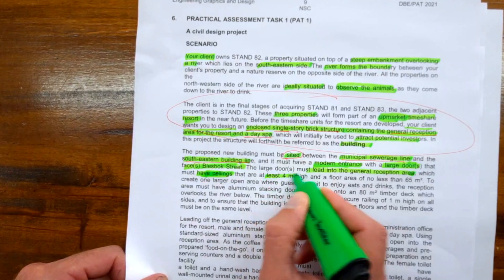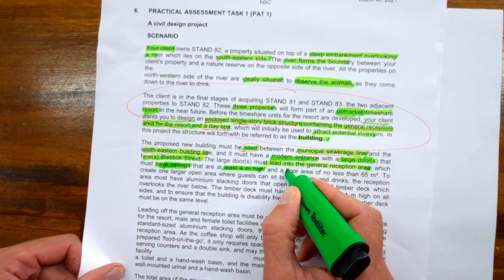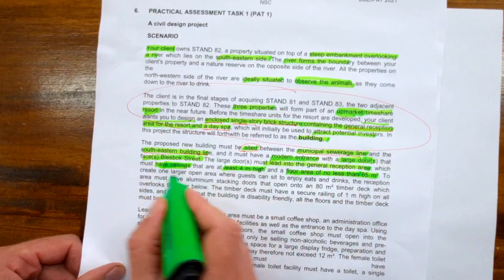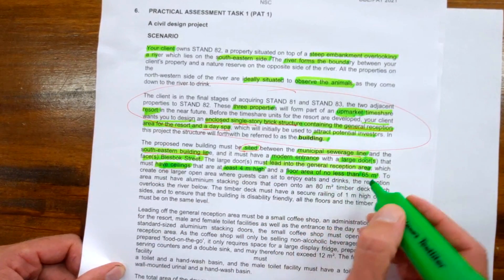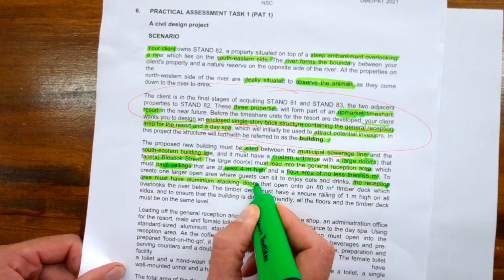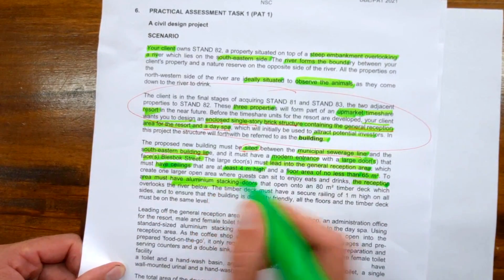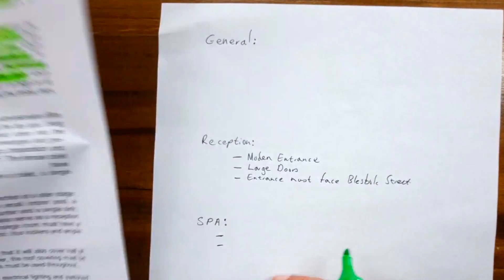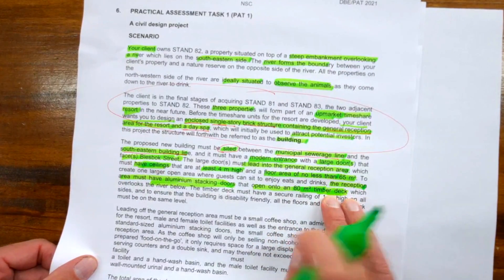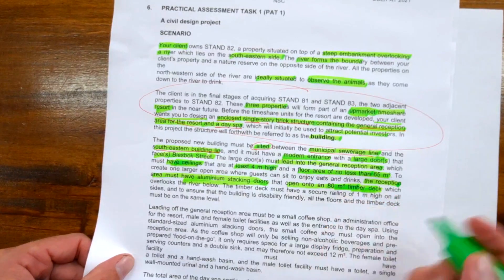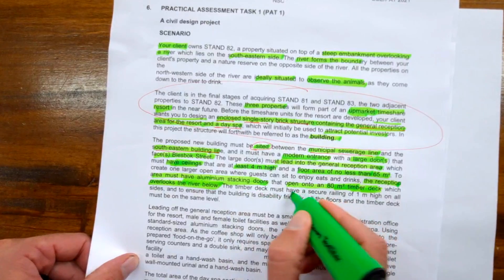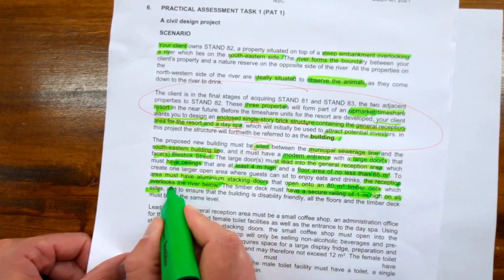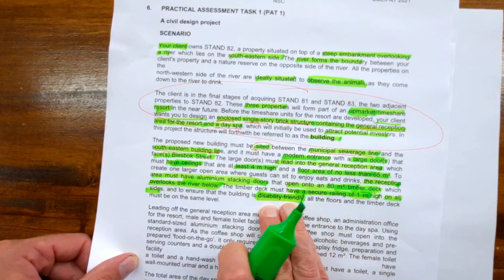The large doors must lead into a general reception area. The reception must have large ceilings that are four meters high, floor area no less than 65 square meters—all specifications for our reception. It must create a larger open area where guests can sit to enjoy eats and drinks. The reception area must have aluminum stacking doors that open onto an 80 square meter timber deck.